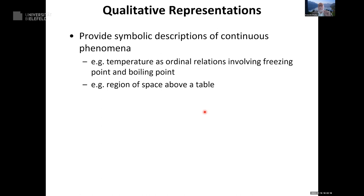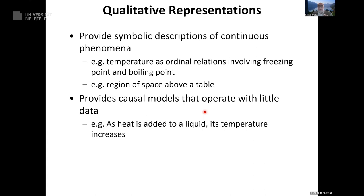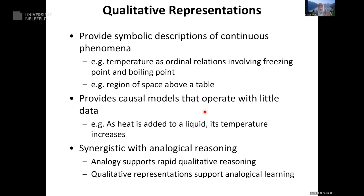The essence of qualitative representation is to provide a symbolic description of continuous phenomena. I can talk about temperature using ordinal relations involving freezing and boiling points, or regions of space above a table — going from the continuous world to a symbolic thing you can talk about and put properties on. They also provide causal models operating with very little data: heat flowing into a liquid increases its temperature unless it's boiling. This is synergistic with analogical reasoning, since analogy descriptions use symbolic relational representations — creating a virtuous cycle.